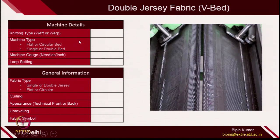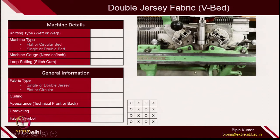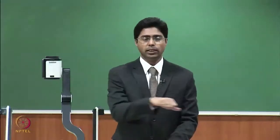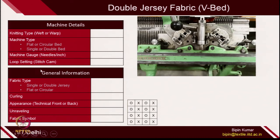We start from the machine details. If you see this particular machine, the fabric is being created on this machine, which is nothing but the V bed machine. Demo number 4 was all about the machine demonstration related to V bed. In the V bed machine, this is the front view of the cam jacket, which was traversing on the machine from left to right and right to left. The loop setting is again similar to the knitting in flat bed, and the stitch cam setting has to be adjusted so that you can control the loop length. I hope you remember this.